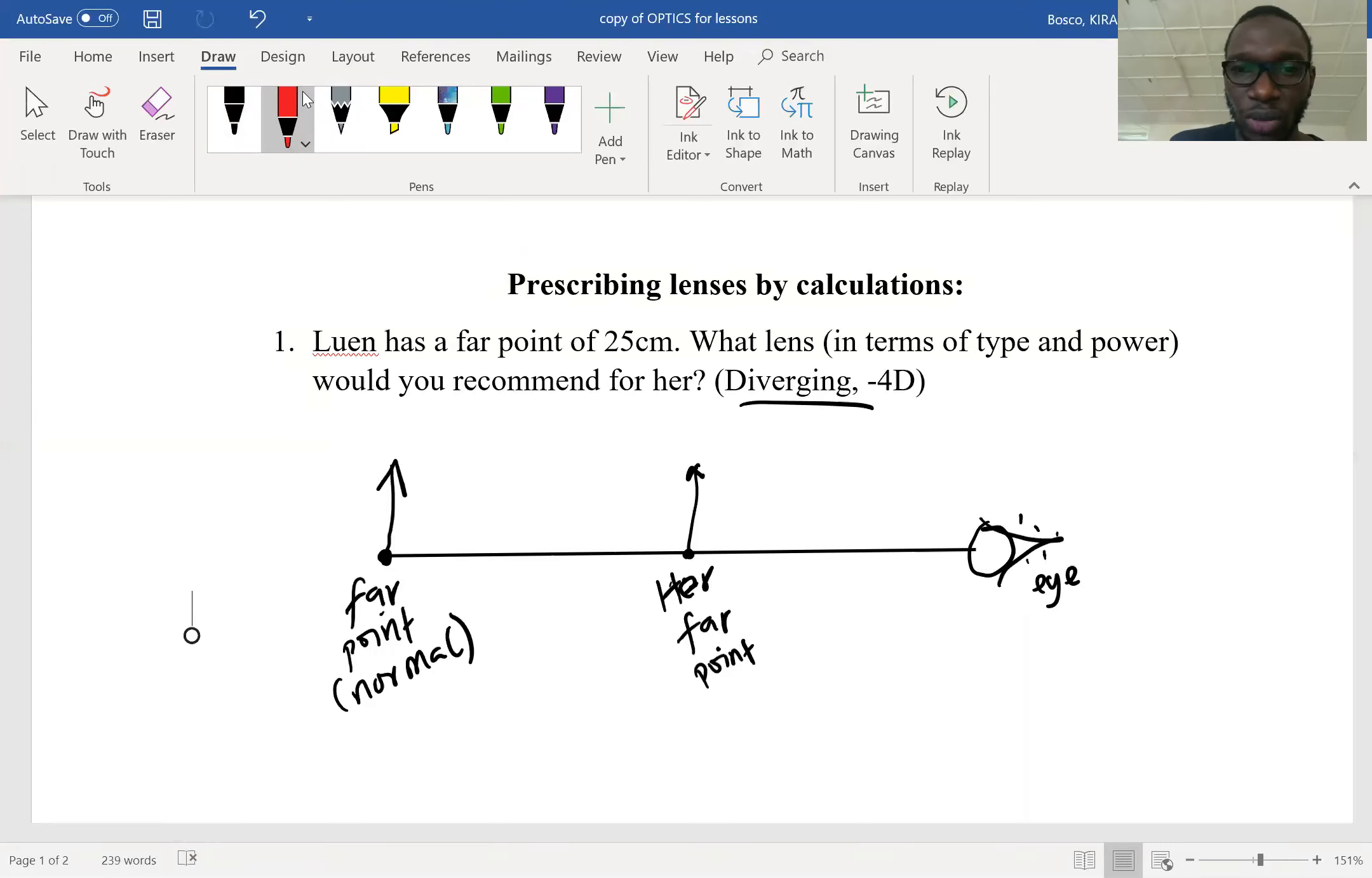This is an illustration that we have. This is the eye, and then the question says that the far point is 25 centimeters. They say this is the far point for the person, this lady without the glasses.